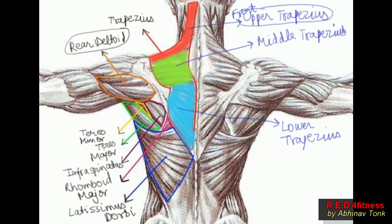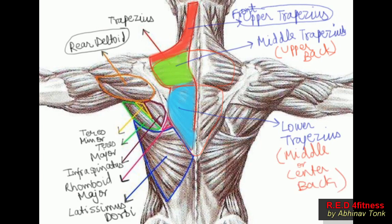Middle trapezius and lower trapezius are the ones we treat as part of back muscles in bodybuilding. In terms of bodybuilding classification, the middle trap is known as upper back. The lower trapezius, collectively from both sides, is known as middle or center back. The lower portion of the back is known as lower back. Teres minor, teres major, and infraspinatus collectively are known as outer back.